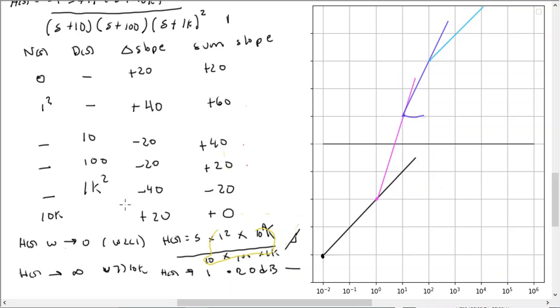Then, when this double pole is active, the slope actually now goes to minus 20 at 1k. And then, when the final zero becomes active, the slope becomes 0.